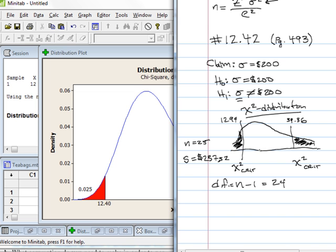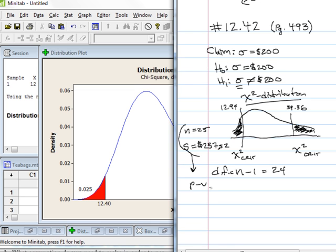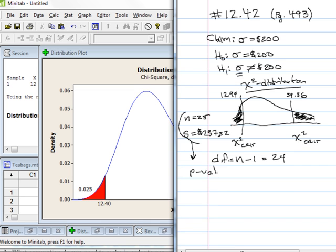The next step for the chi-square distribution, once we've got the rejection regions, we want to use our sample statistics to compute a p-value. We can also compute the chi-square stat value, which we would plot on the graph where the rejection regions are. The p-value we would just compare with alpha. So let's go back to Minitab.